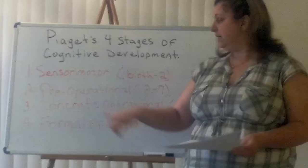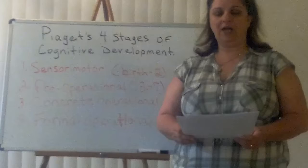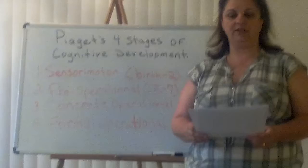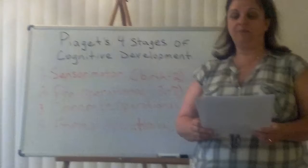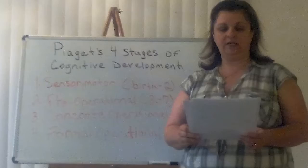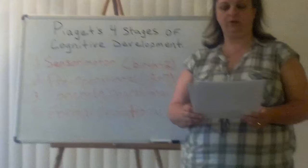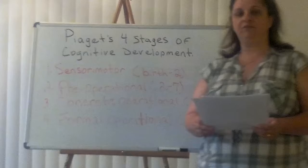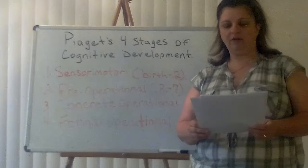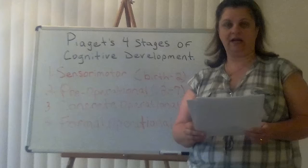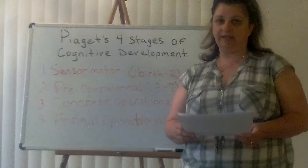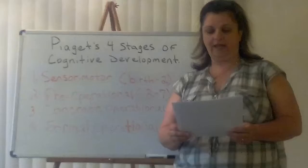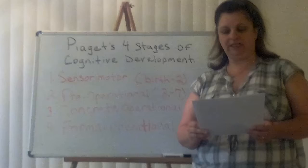Stage three: concrete operational, ages seven to eleven. The child can now reason logically about concrete events and classify objects into different sets. There is evidence for organized, logical thought — the ability to perform multiple classification tasks, order objects in a logical sequence, and comprehend the principle of conservation. The child is capable of concrete problem solving. Piaget considered the concrete stage a major turning point in the child's cognitive development because it marks the beginning of logical or operational thought. This means the child can work things out internally in their head rather than physically try things out in the real world. Children can conserve number, mass, and weight. Conservation is the understanding that something stays the same in quantity even though its appearance changes.